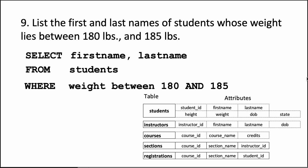You can say weight between 180 and 185; it's very clear what it means. When you are talking about a single column like weight whose value falls in a certain range, then you can write it using the BETWEEN option of SQL.